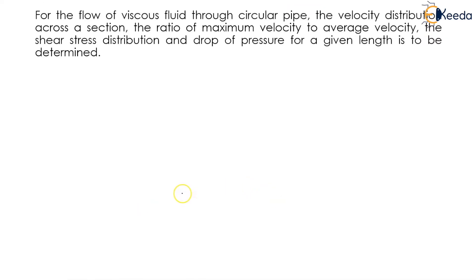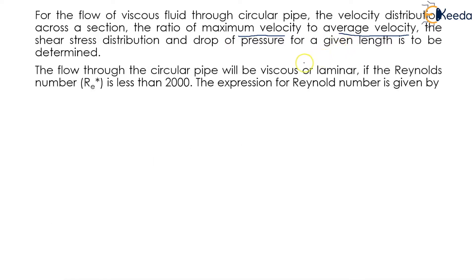For the flow of viscous fluid through a circular pipe, the velocity distribution across a section, the ratio of maximum velocity to average velocity, the shear stress distribution, and the drop of pressure for a given length are to be determined. The flow through the circular pipe will be viscous or laminar.